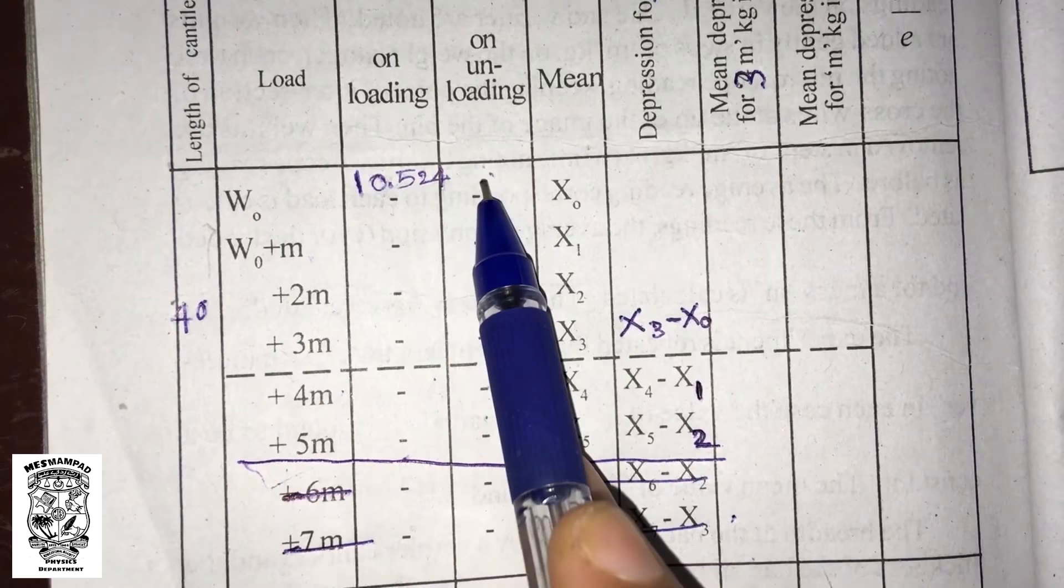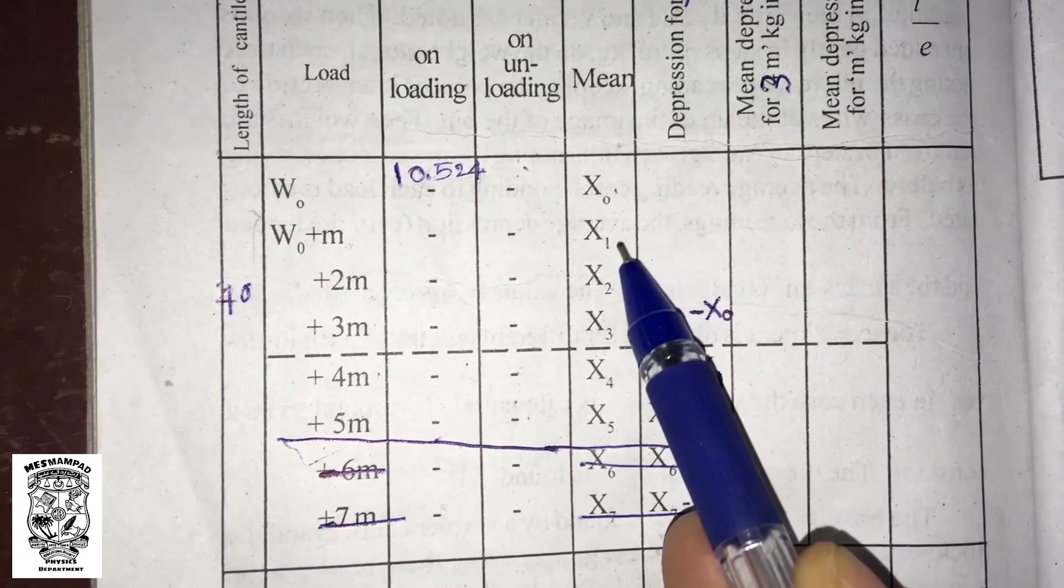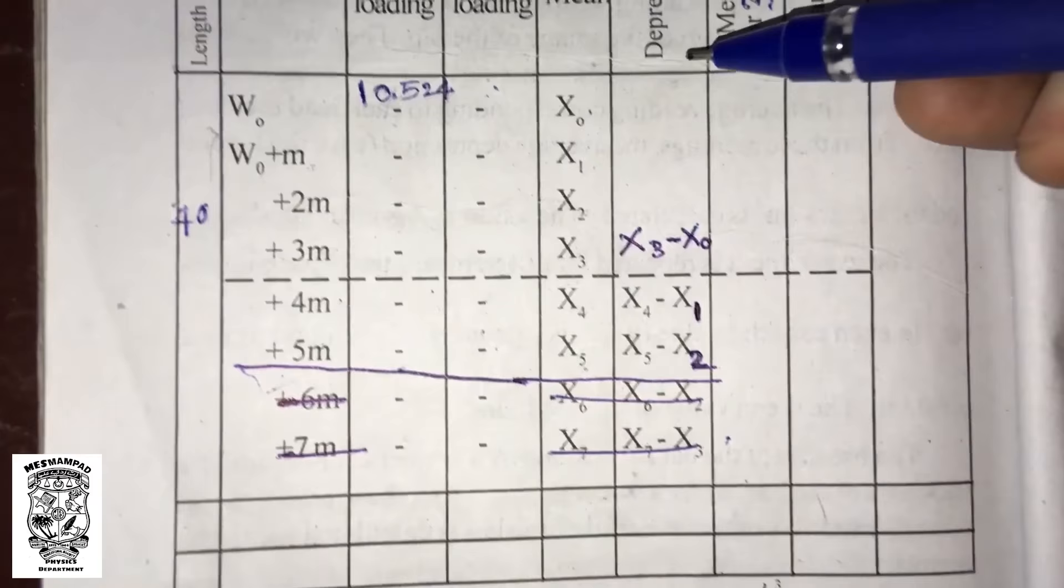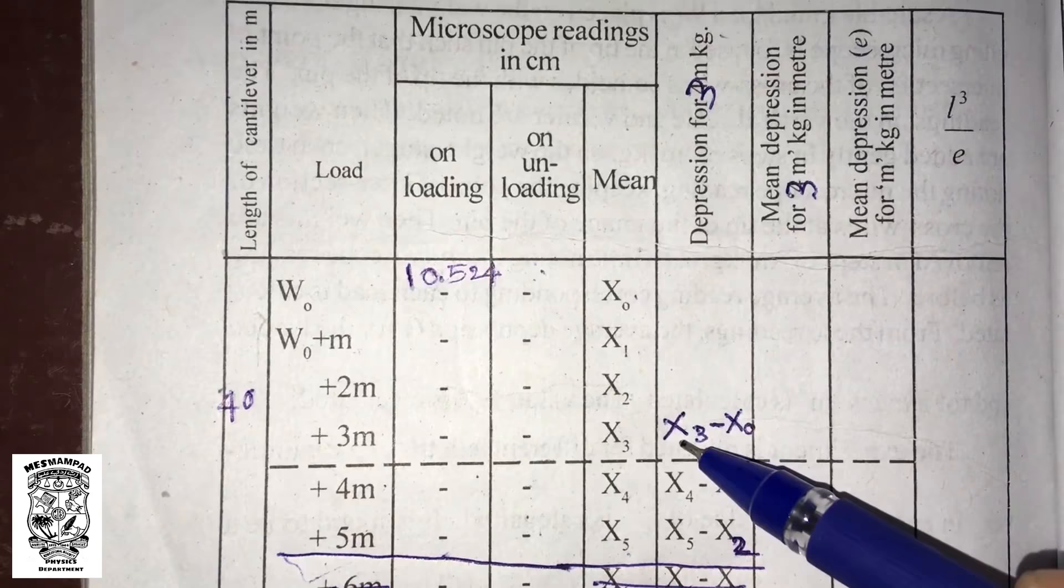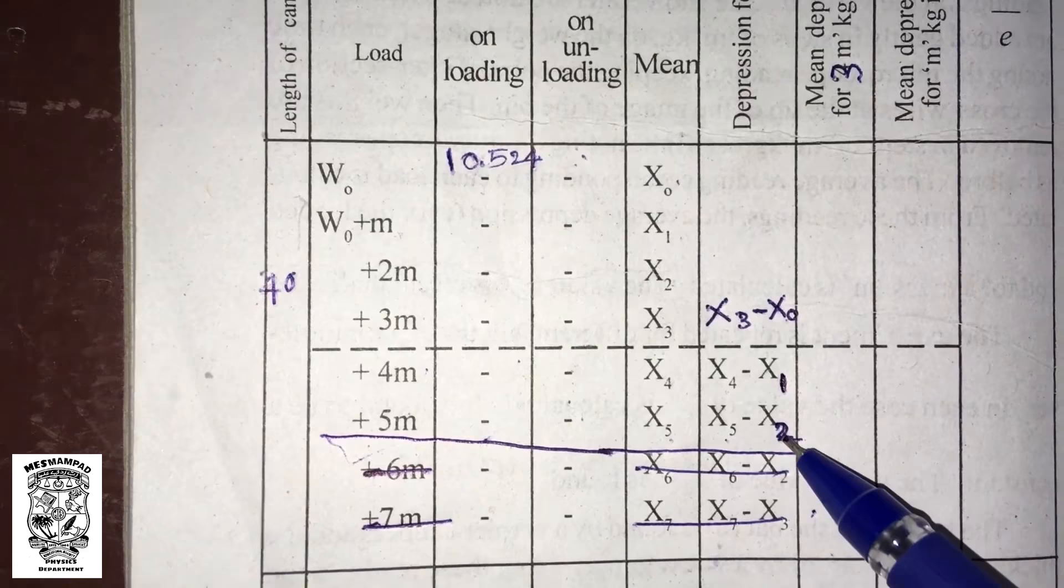Loading, unloading, and the mean are x0. For W0 plus M, the mean reading is x1, x2, x3, x4, and x5. Next, we have to find out the depression for 3M kilogram. That is, the W0 reading and W0 plus 3M reading difference. That is x3 minus x0, x4 minus x1, and x5 minus x2.